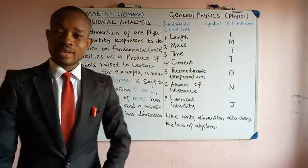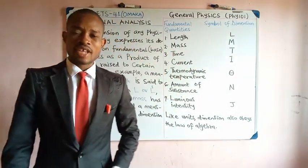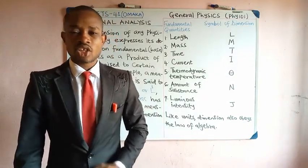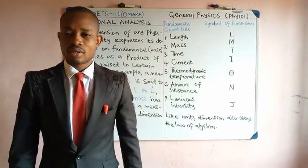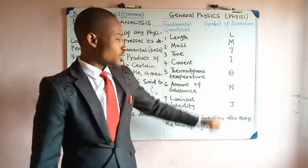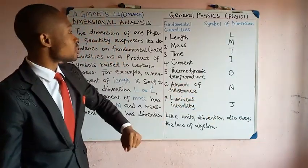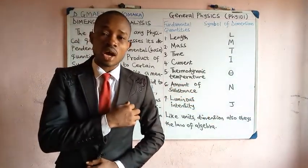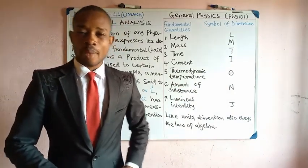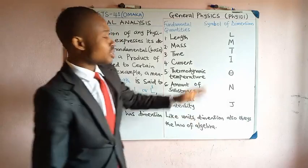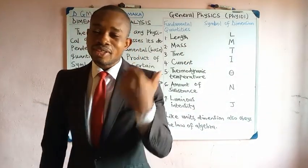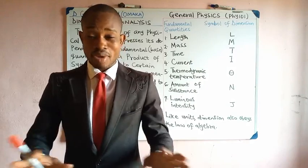Let us quickly go through them. Length — the symbol of its dimension is capital L. Mass is capital M. Time is capital T. Current is capital I. Thermodynamic temperature is theta. Amount of substance has dimension capital N. And luminous intensity has dimension capital J. These seven base quantities and their dimensions are very important for you to have at heart — it is expected that you memorize them.